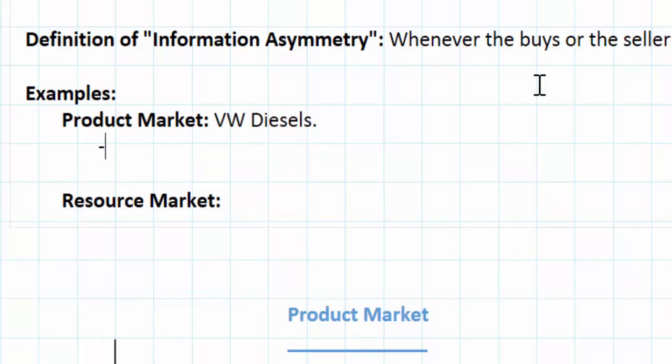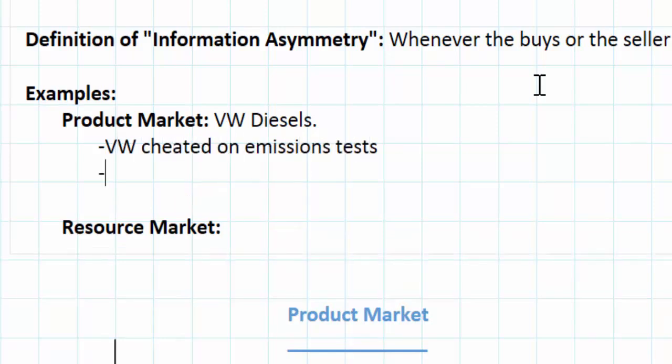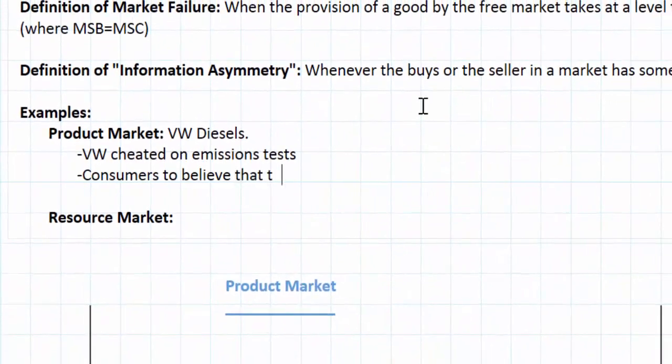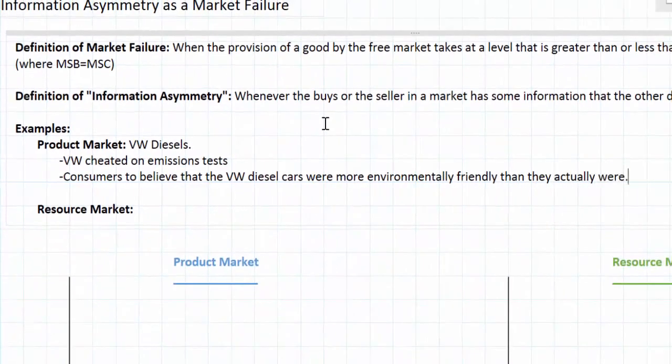So what happened in this situation? We know that Volkswagen cheated on emissions tests. This led consumers to believe that their cars were more environmentally friendly than they actually were. As a result of this asymmetric information, Volkswagen itself knew that these cars were far more harmful to the environment than consumers did.